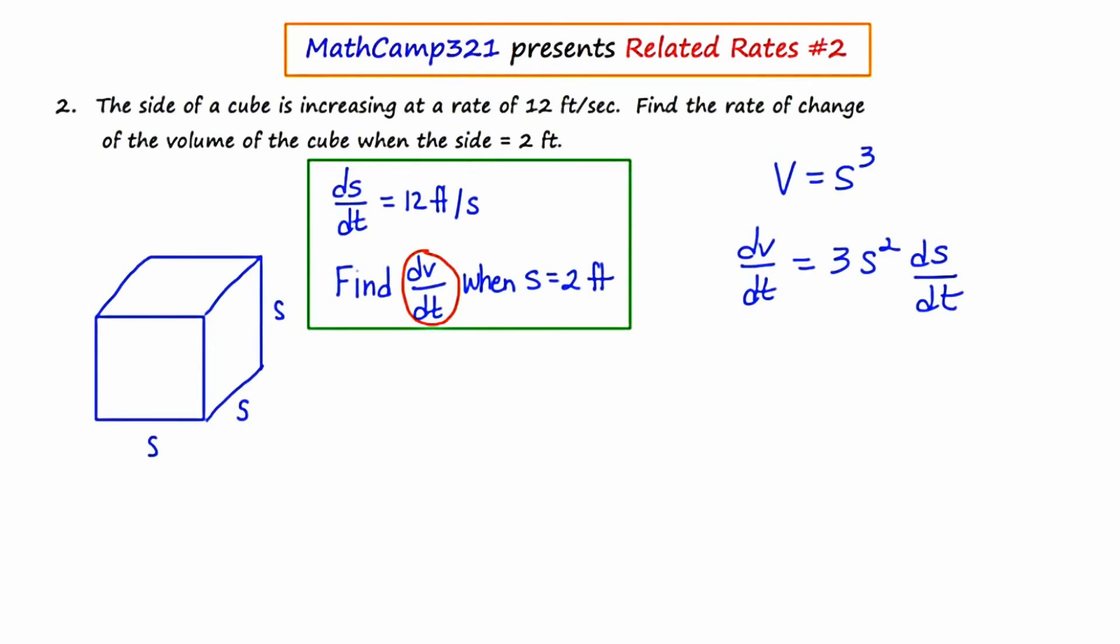So I'm going to say that dV/dt is equal to 3 times blank squared times blank. Now the first blank is for the side. And we're supposed to substitute in when the side is 2 feet. So I'm going to place 2 in the first blank. And the second blank is for ds/dt. And that's given in the very beginning of the question as 12 feet per second. So 3 times 4 is 12, and 12 times 12 is 144.